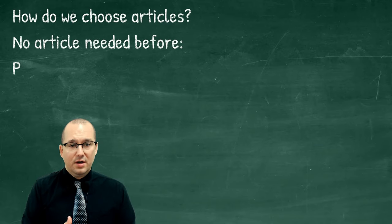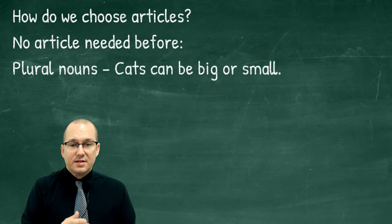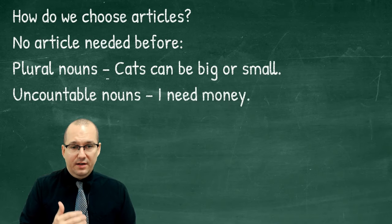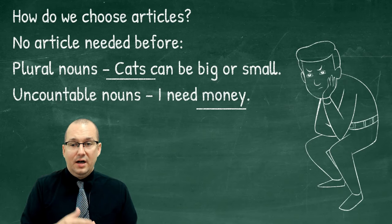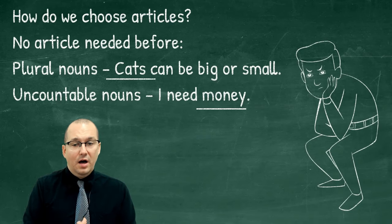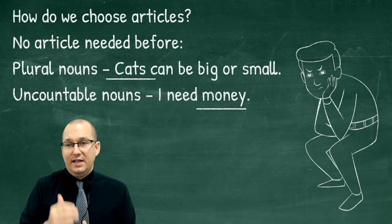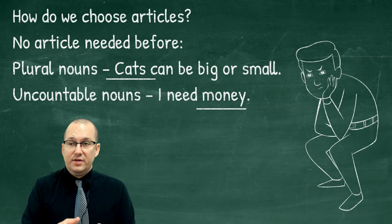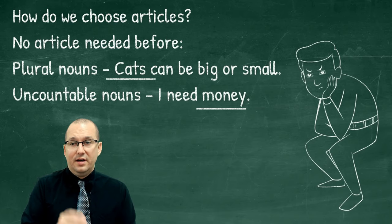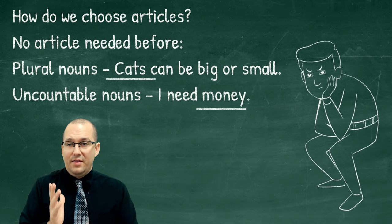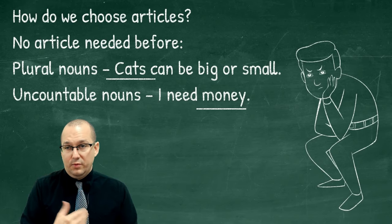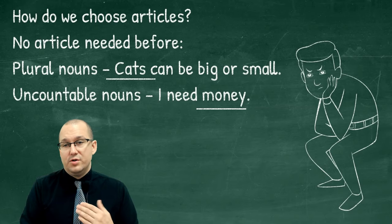Now let's talk about when we don't need articles. For plural nouns — two, three, four — there's no article. For example: 'Cats can be big or small.' For uncountable nouns: 'I need money' — no article. This goes back to the tip: if a noun is countable, write 'a cat' in your vocabulary journal. If it's uncountable like 'money,' there's no 'a.' That way it'll help you naturally remember which nouns are countable and which are not.